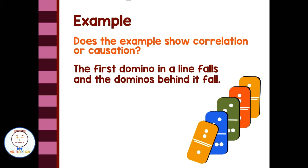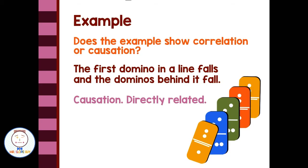Does this example show correlation or causation? The first domino in a line falls and the dominoes behind it fall. This would be a great example of causation — they're directly related. The first domino falling causes the other dominoes to fall.